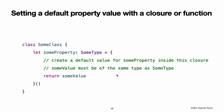This is a skeleton outline of how a closure can be used to provide a default property value. Note that the closure's end curly brace is followed by an empty pair of parentheses. This tells Swift to execute the closure immediately. If you omit these parentheses, you are trying to assign the closure itself to the property and not the return value of the closure.